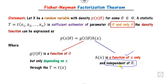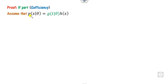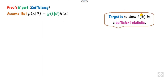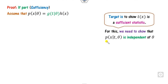The proof is straightforward. Since it is an if-and-only-if statement, we have to prove both directions. First, let us assume the factorization condition holds; our target is to prove that T(x) is a sufficient estimator. To prove it is sufficient, we want to show that the density function of X given T is independent of theta — that is the definition of sufficiency.